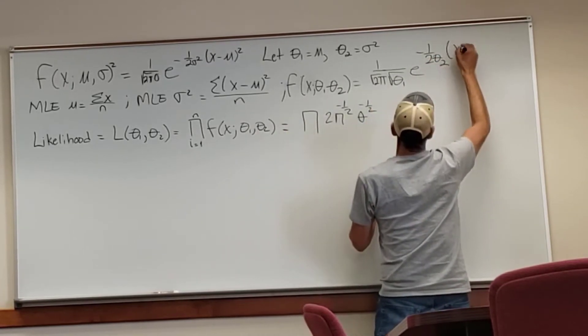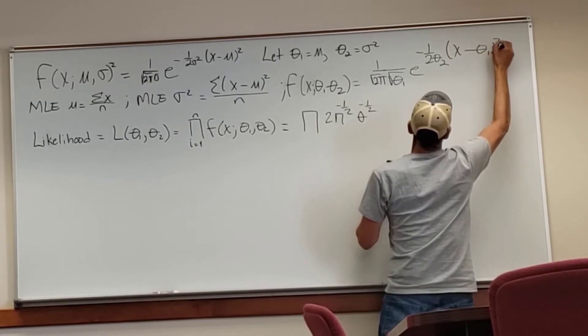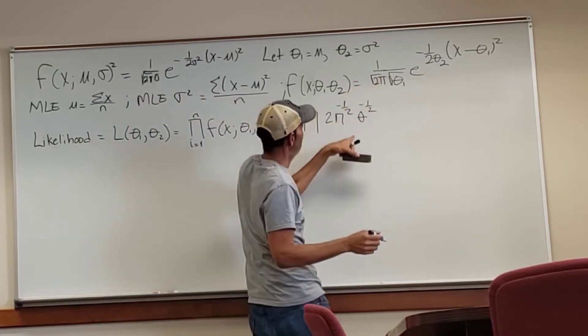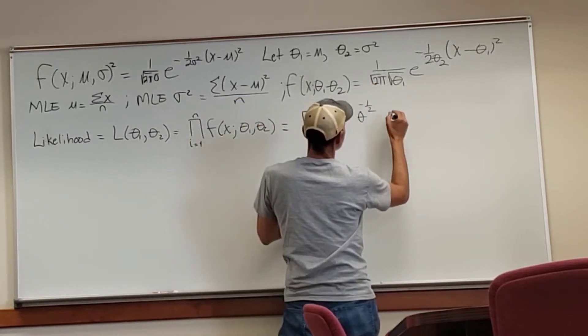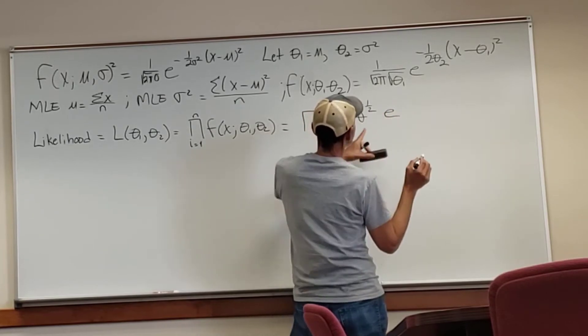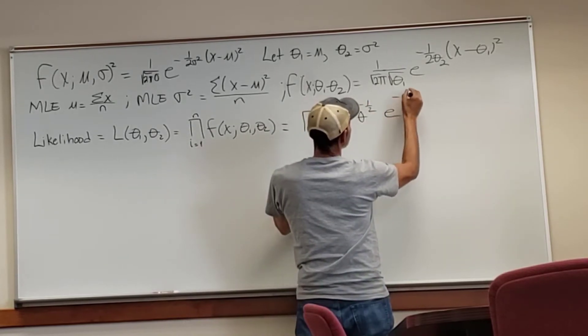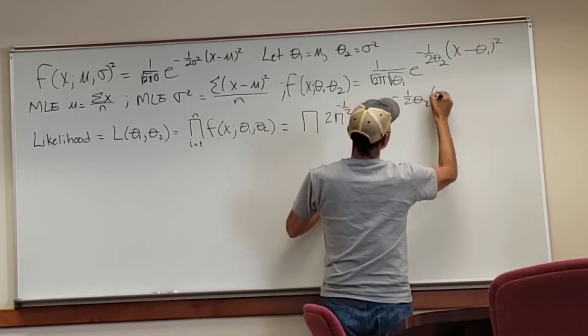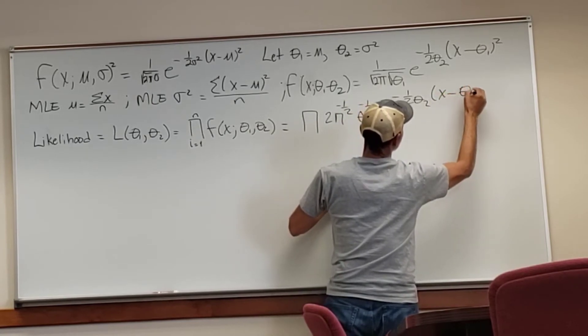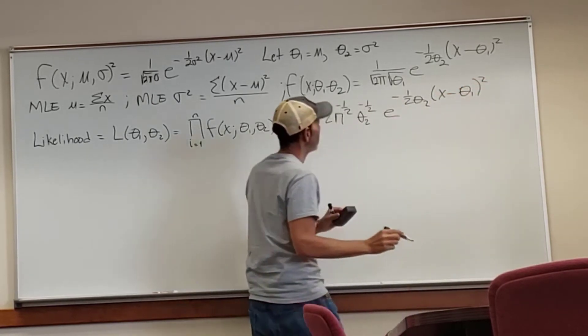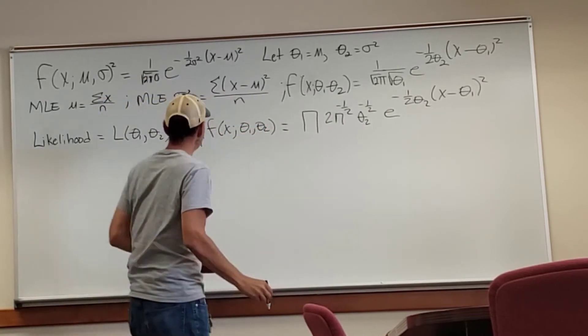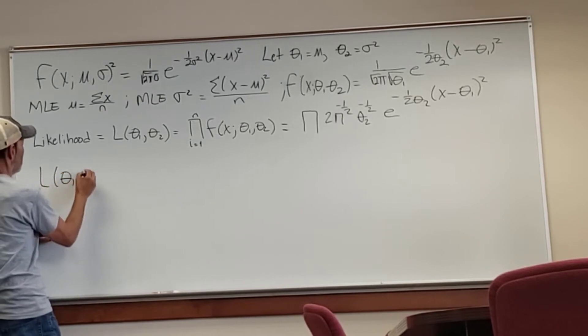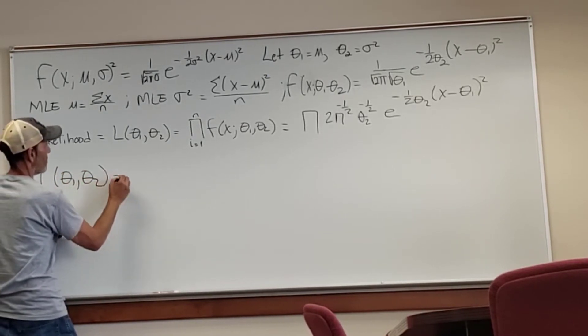So you see that earlier I said theta 1 is equal to mu and theta 2 is equal to sigma squared. So if we look at the equation for the normal distribution, in the denominator you have 1 divided by square root of 2 pi sigma, because theta 2 is sigma squared, we take the square root. So this is the likelihood function.